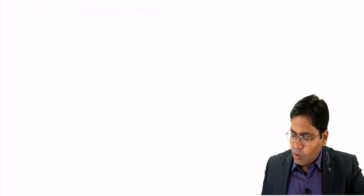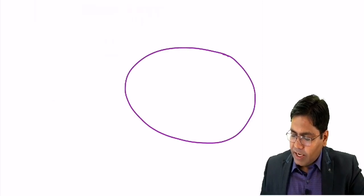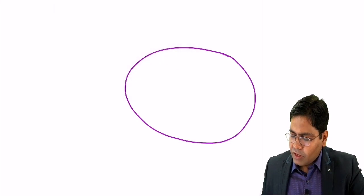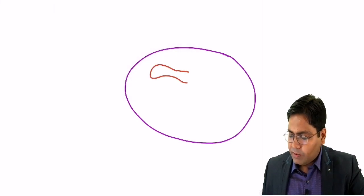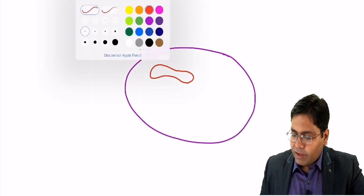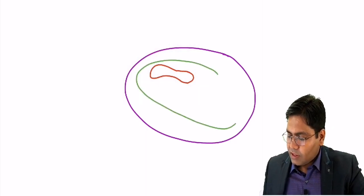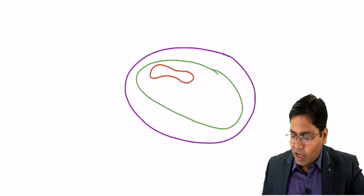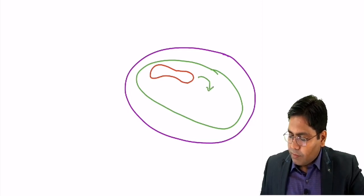Now how is this bilirubin formed? Bilirubin is formed when inside the spleen, old aged red blood cells are broken down by splenic macrophages. These splenic macrophages break down the RBCs inside the spleen to form bilirubin.